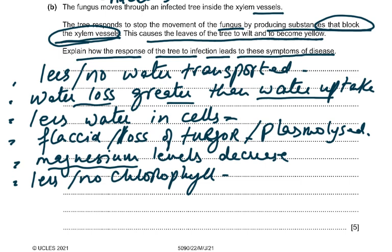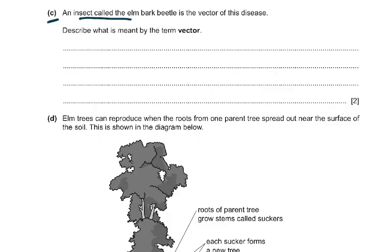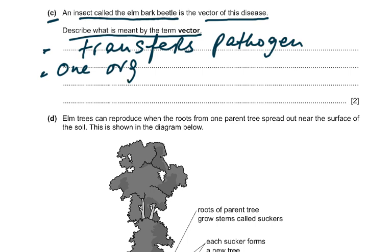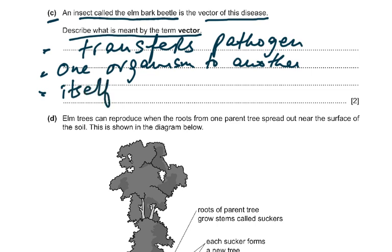The elm bark beetle is the vector of this disease. A vector transfers or carries pathogens from one organism to another — like the female Anopheles mosquito is a vector of malaria. The beetle carries the fungus to the tree. You could also state that the vector itself is not affected.